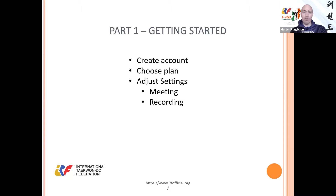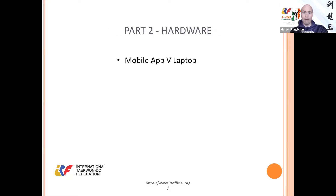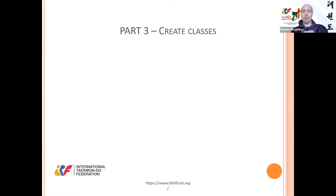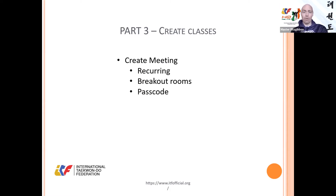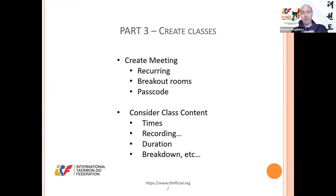How to adjust your settings from the start — if you set up your meeting settings from the very beginning, they're going to apply to all of your classes and you don't have to keep doing it repeatedly. How to set up your recording settings, what hardware to use — audio, visual and so forth. Mobile apps or laptops, should you use a microphone or not, a dedicated microphone or your built-in microphone, a separate webcam, and lighting. Then how to create your classes — do you want to record them, the same time every week, two or three days, breakout rooms, passcodes, class content times, and how to break them down by age or grade.